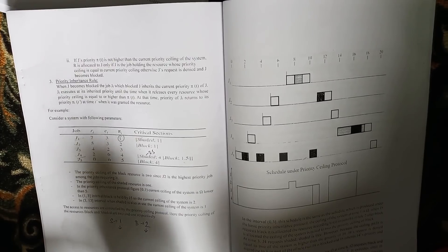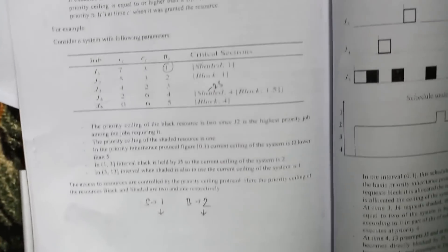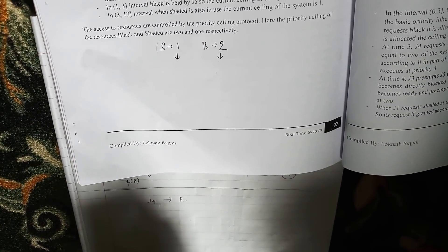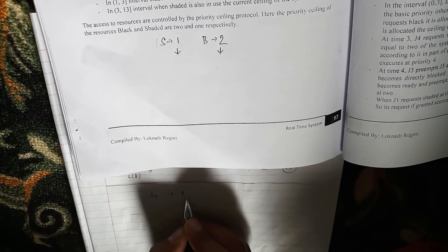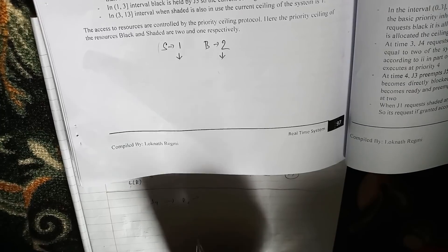If you have a resource, we can add a resource. So what are the A2? If you have a priority, you have a job, and you have to log into the R2 and you have to utilize it.